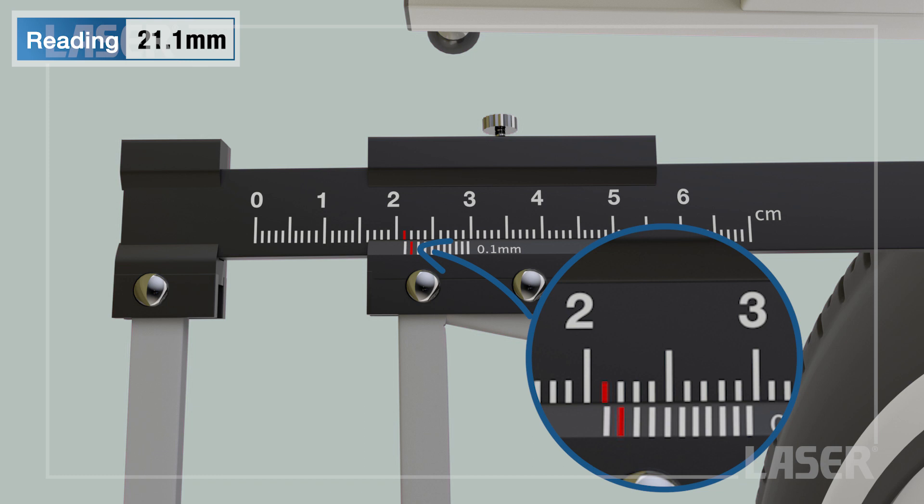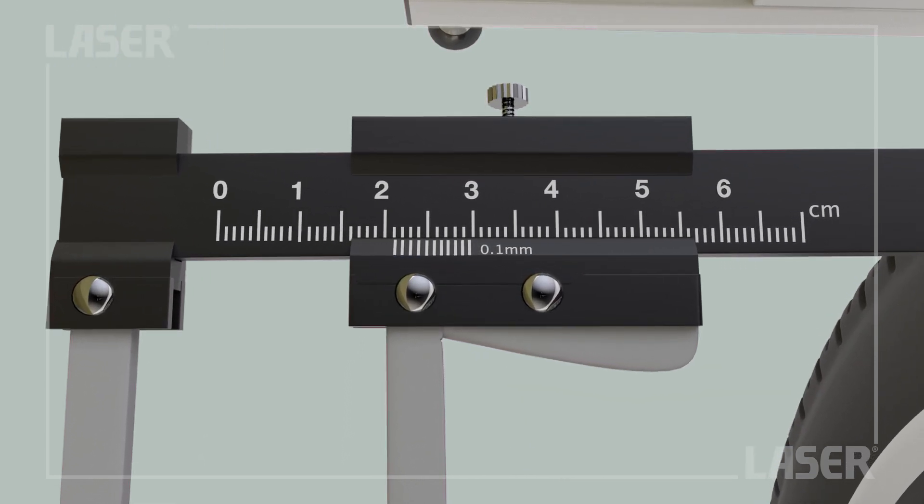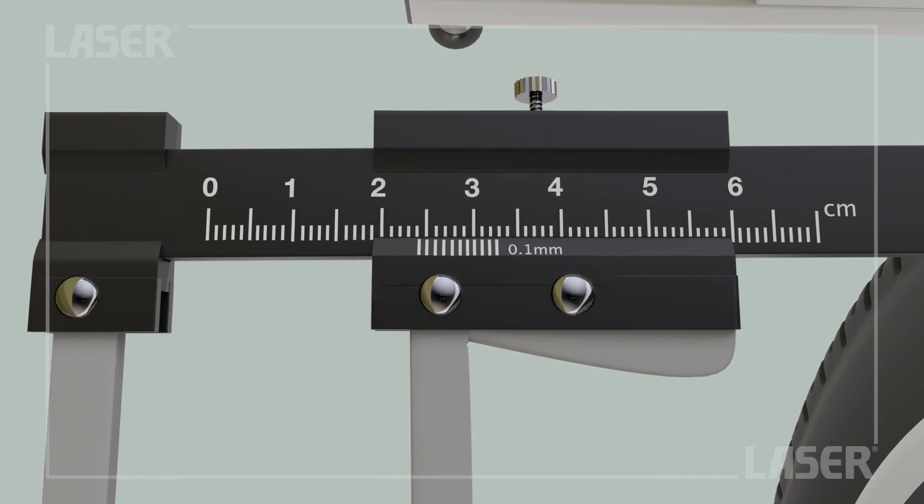Now read off the lower mark that lines up closest to the upper scale. In this case the 0.1 mark lines up with the mark above. In this case the lower zero mark is closest to 24 and the lower 0.5 mark lines up with the mark above.